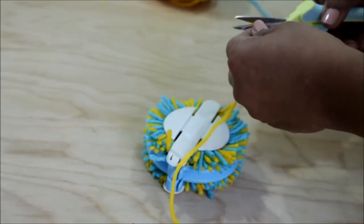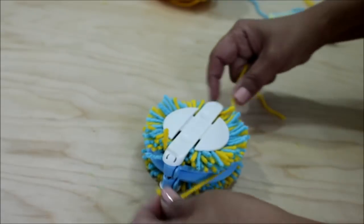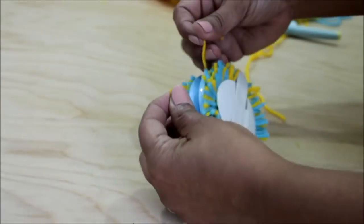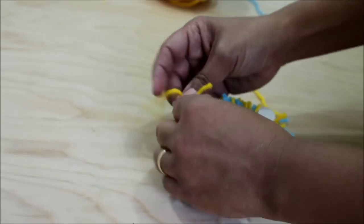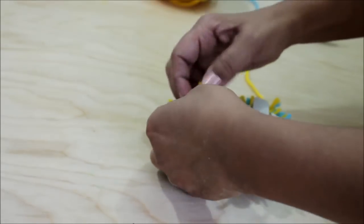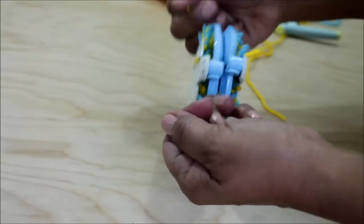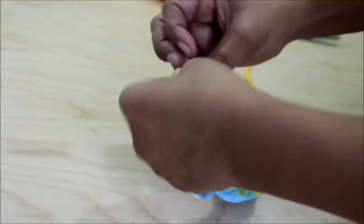I use twice the size of the pom-pom maker and then you put the yarn through it like this and pull on it and make a nice tight, tight, tight, like you're angry at somebody type of knot.